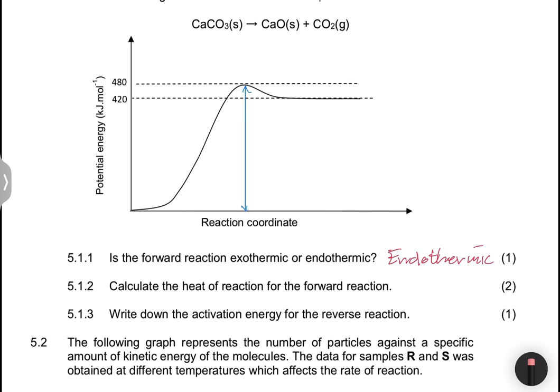If I want to find the activation energy for the reverse reaction — for the forward reaction, you always take the energy of the activated complex, which is the peak, minus the energy of the reactants where the graph started. For the reverse reaction, it's the peak minus where the products start, so that would be 480 minus 420.